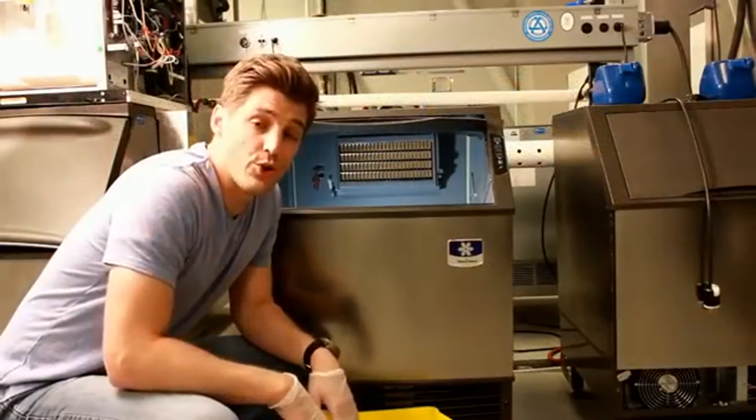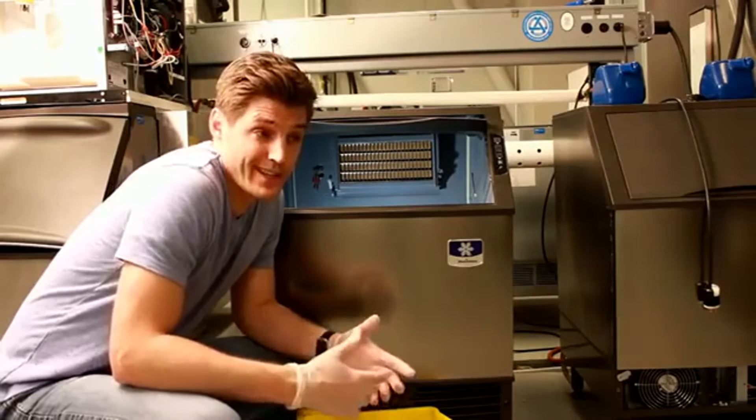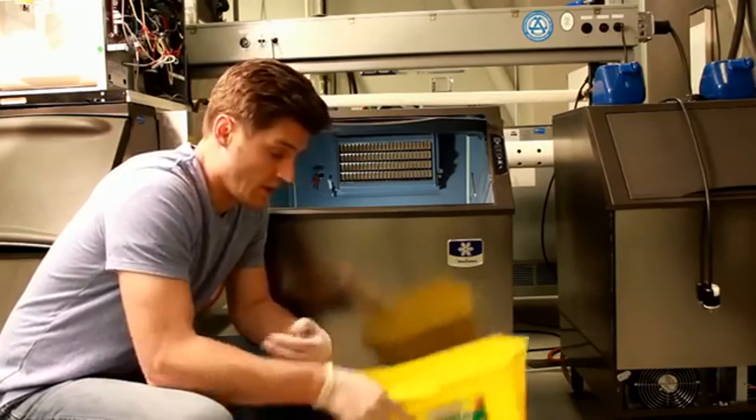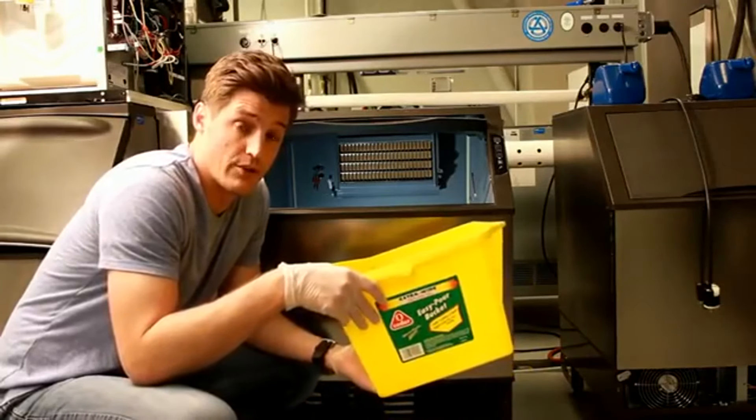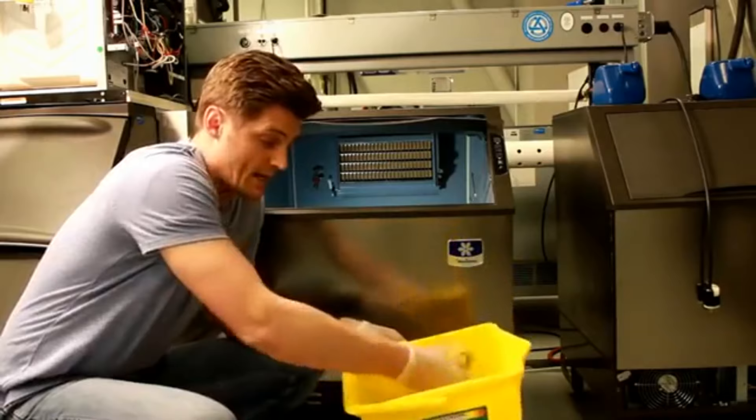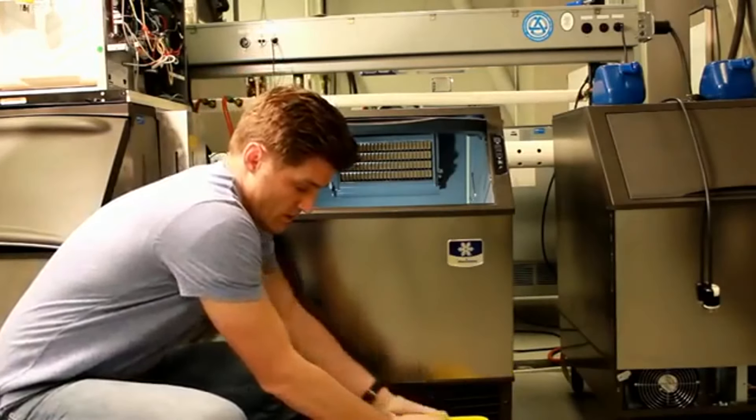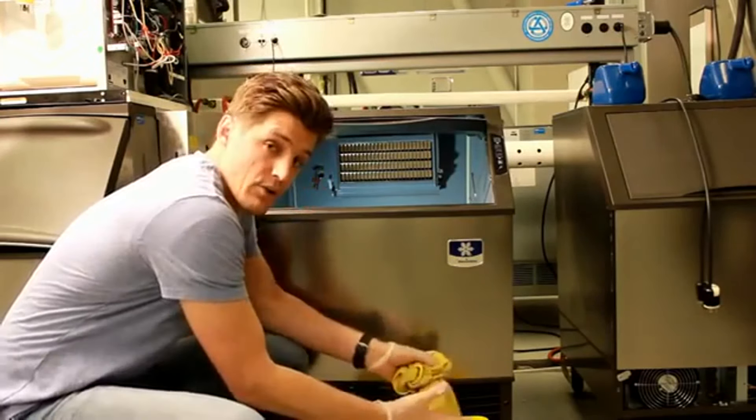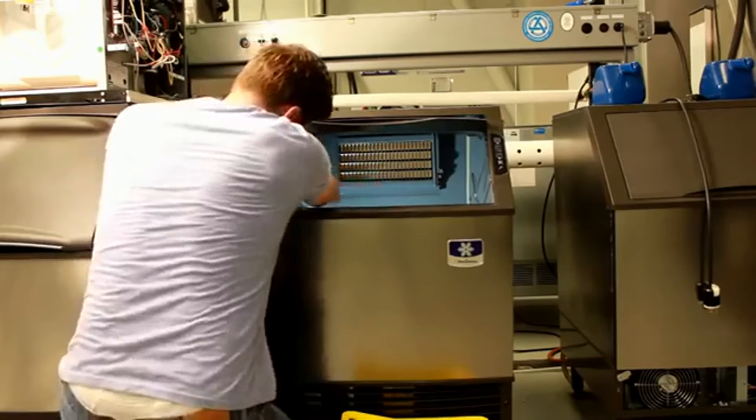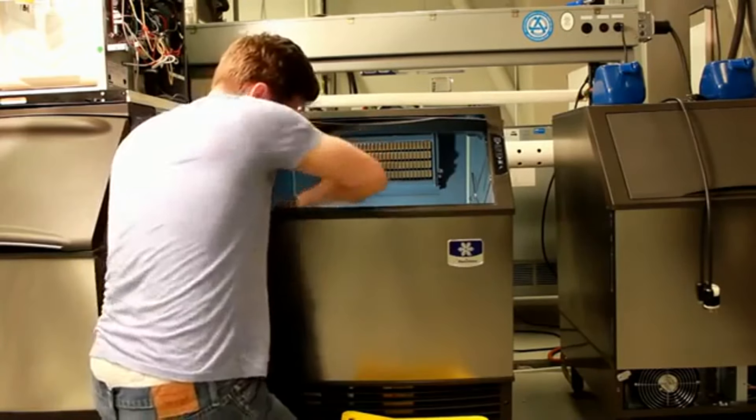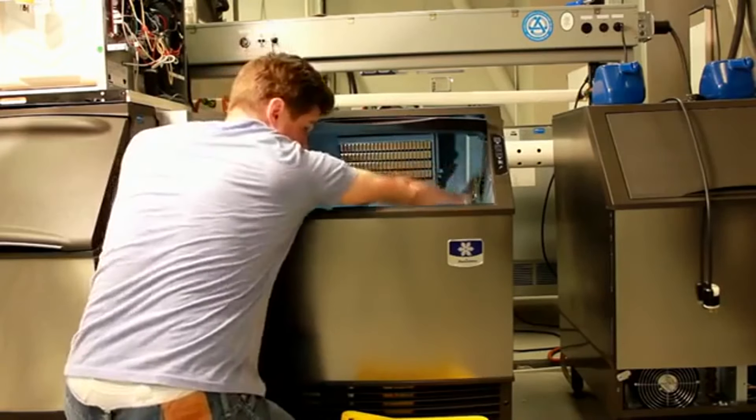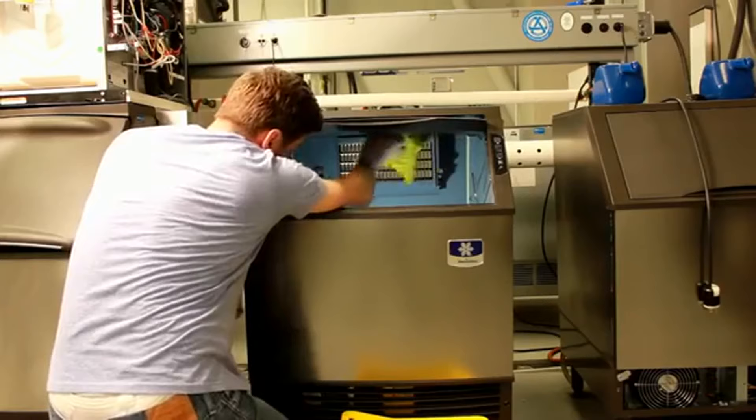While the other food zone components are soaking, I'm going to take the time to wipe out the inside of the bin. I've made another solution of cleaner. It's the same ratio. And with a rag, I will simply wipe down all the surfaces inside the food zone, the sides and the bottom around the evaporator plate as well.